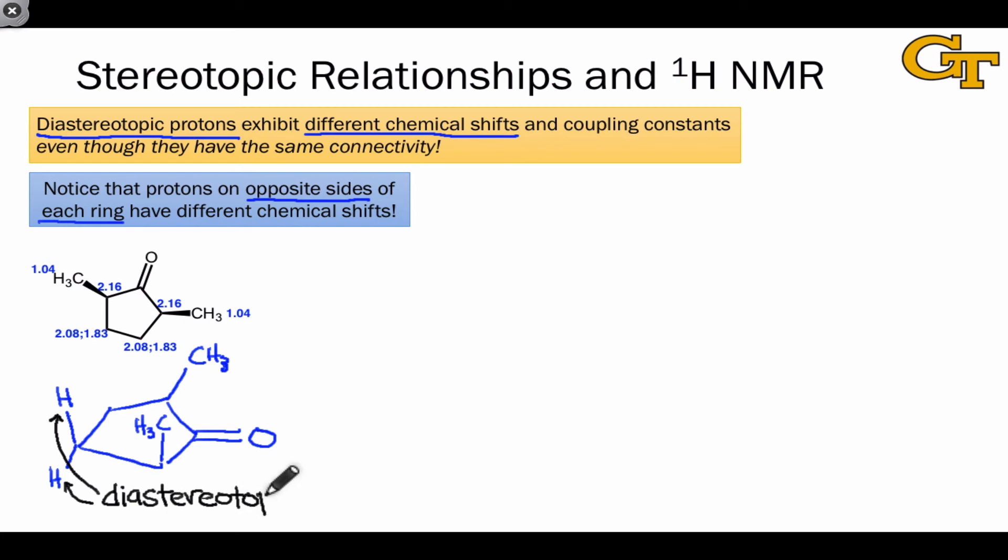And I'll let you verify that on your own using either the Q-test or symmetry elements. The proton cis to the two methyl groups has a higher chemical shift, 2.08, than the proton that's trans to the methyl groups, which shows up at a chemical shift of 1.83. These distinct chemical shifts are directly a result of the fact that the protons are in different environments because they're diastereotopic.